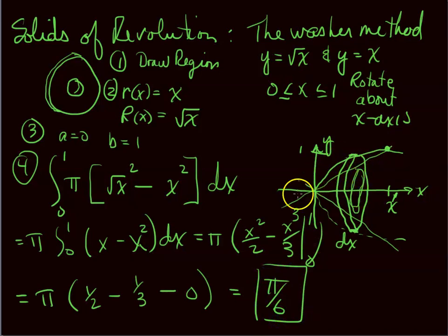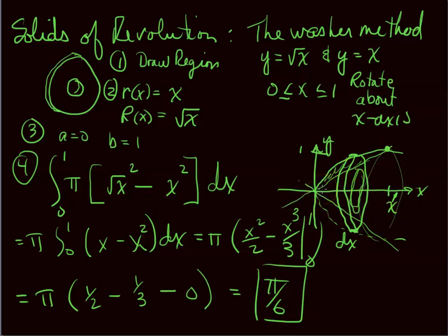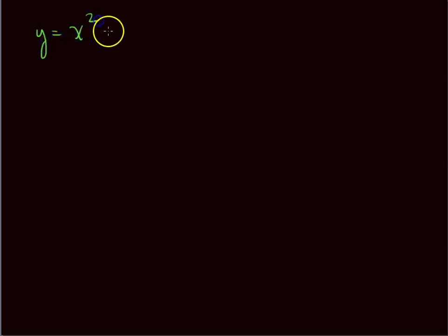The result π/6 makes sense — it's the volume of this funnel-shaped solid. We don't always have to integrate with respect to x. Suppose we had y = x² and y = x and spun that around the y-axis.